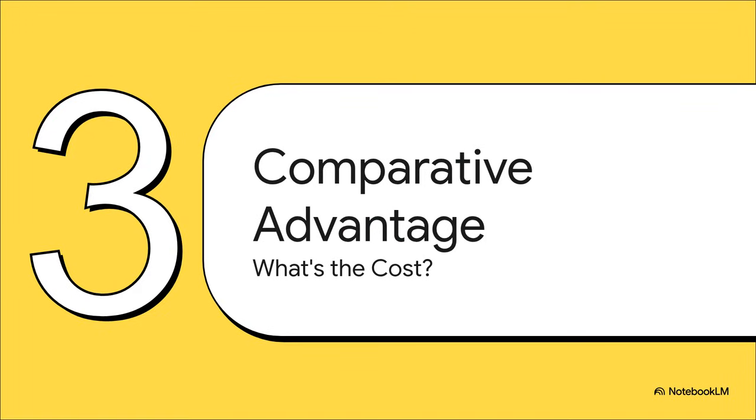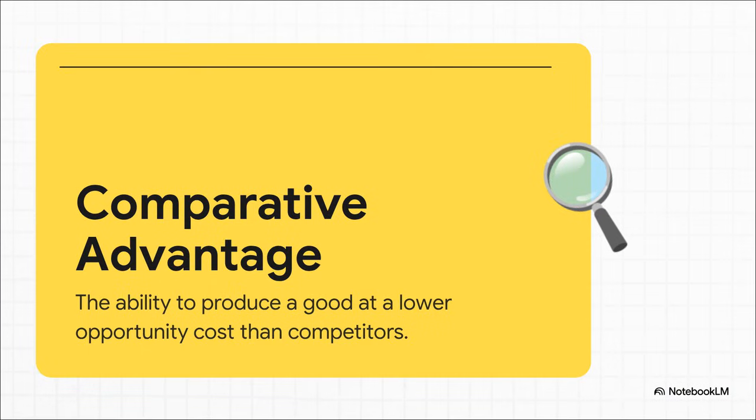Yeah, that brilliant answer is found in our second concept, comparative advantage. And this one, it's not about who's the best. It's all about the cost. Specifically, something called opportunity cost. Opportunity cost is really the secret sauce here. Just think about it like this. Anytime you decide to do one thing, you are, by definition, deciding not to do something else. That something else you gave up, that's your opportunity cost. So having a comparative advantage just means your cost is lower. You sacrifice less.